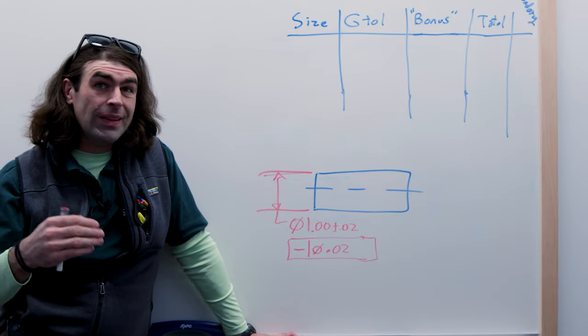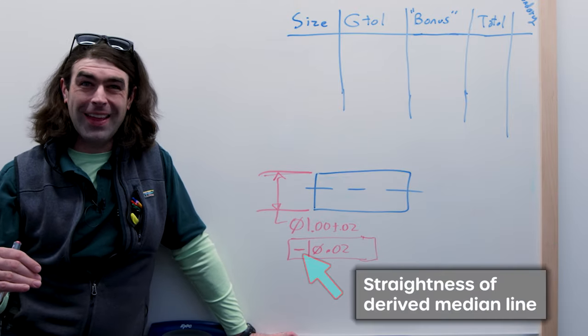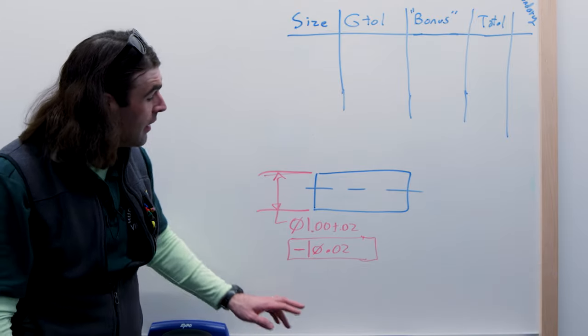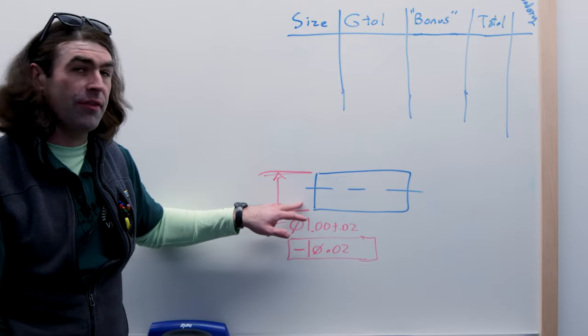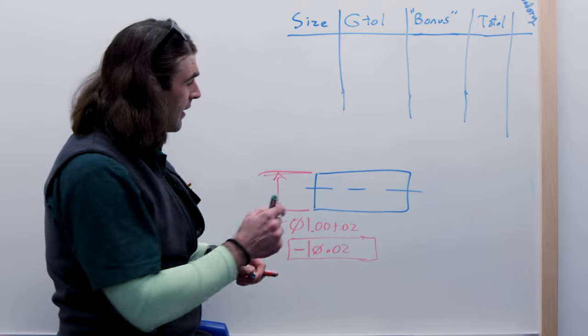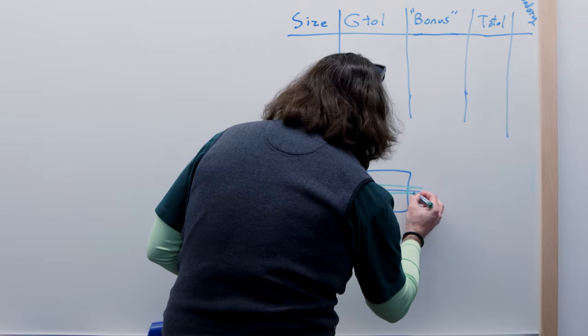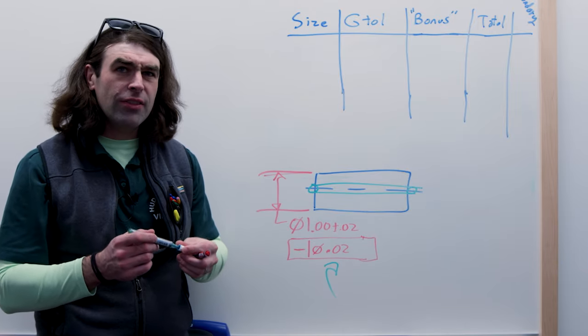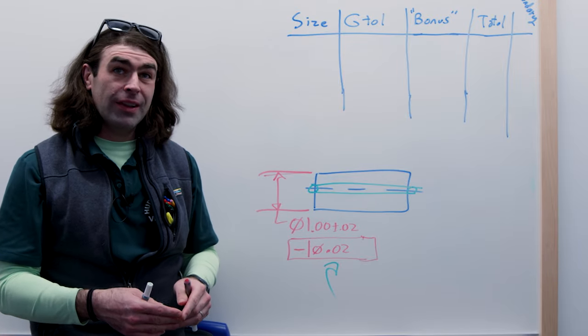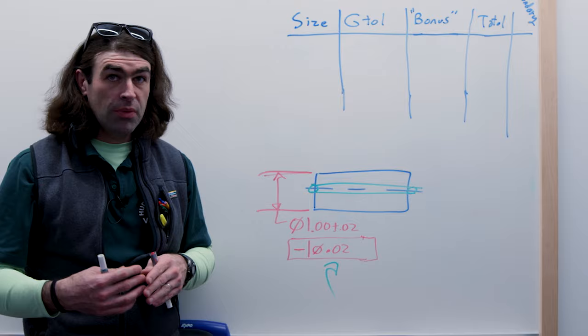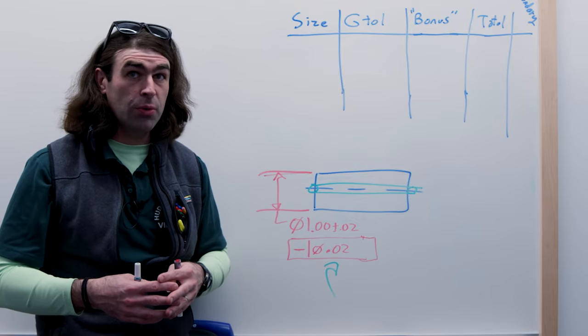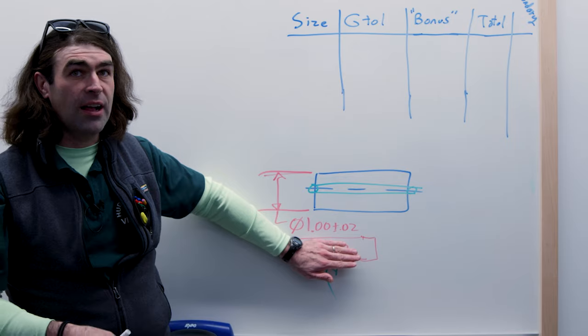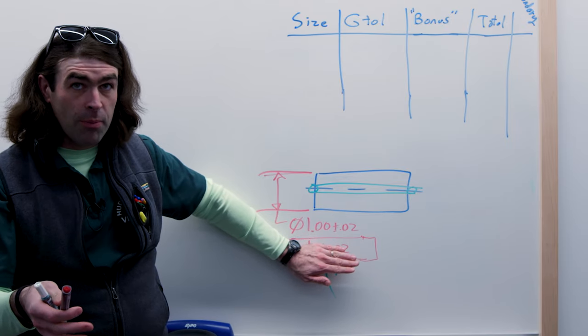We're going to be looking at a straightness tolerance. This is something you don't see all that often in the wild, but it's helpful for this discussion because it's basically the simplest case we can go to. What this is controlling is the derived median line of this feature. Don't worry about it really. All we're trying to say is the middle. The middle of this feature needs to be within a cylinder that is this size. What it lets us do is control the form separately from the size. In the ASME system, the size is the form unless you do something to release that. So without this, the total straightness is 0.04 - it's the total size tolerance. We've got plus or minus 0.02, the total form is 0.04. It could be straightness.